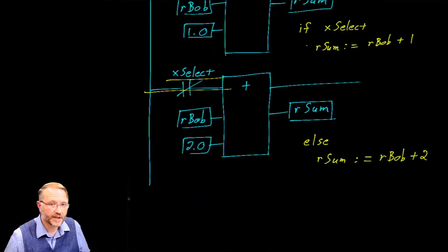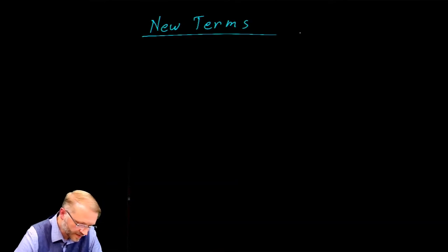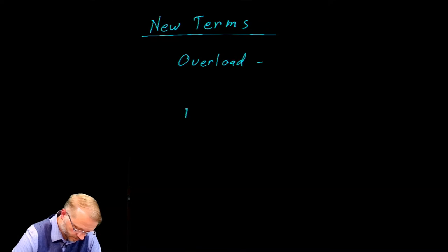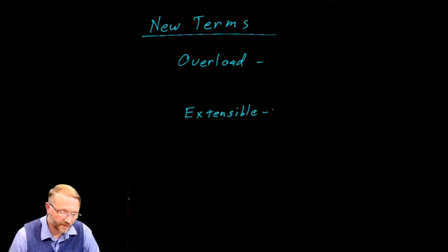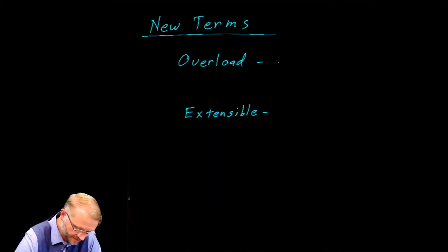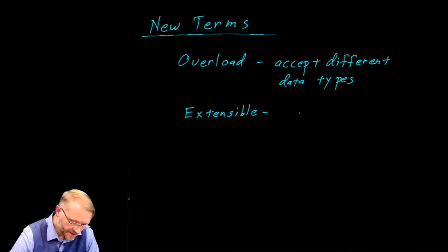We need to add two terms to our vocabulary: overload and extensible. To overload a function is to accept different data types. To be extensible is to accept multiple inputs.